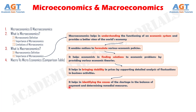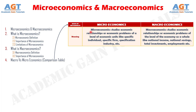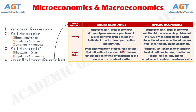Now let's discuss the difference between microeconomics and macroeconomics in a tabular form. Difference number one: Microeconomics studies economic relationships or economic problems at the level of economic units like a specific individual, specific firm, specific industry, etc. Whereas macroeconomics studies economic relationships or economic problems at the level of the economy as a whole — like national income, national savings, total investments, employment, etc. Number two: Price determination of goods and services, their allocation for various functions and determination of the remuneration of the resources are the subject matter of microeconomics. Whereas the subject matter of macroeconomics includes level of national income, its effective factors and results, income, employment, savings, investments, etc.